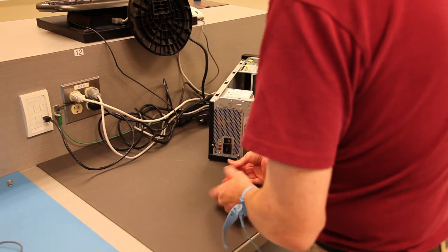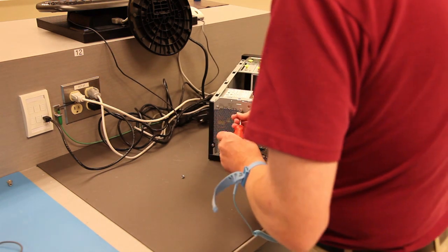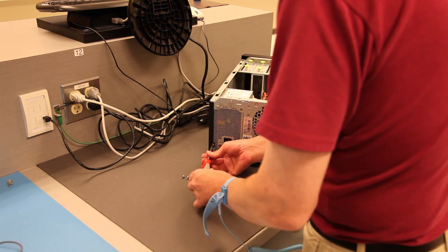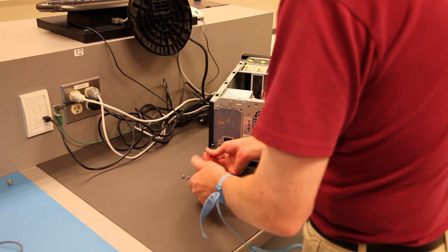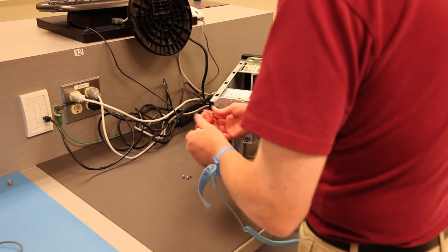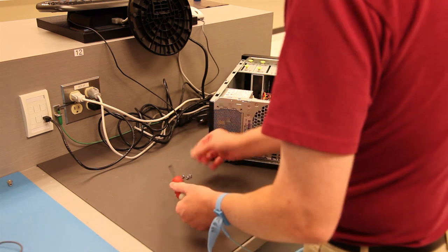Once the screws on the power supply are removed, slide the power supply slightly forward until it's free. You may then need to rotate the power supply slightly until it can come out of the case. Be very careful when removing it from the case so that you do not drop the power supply on the motherboard.